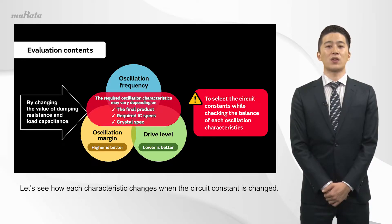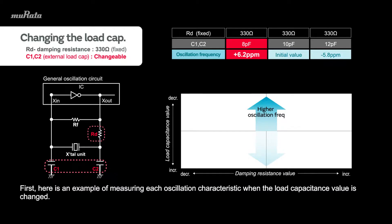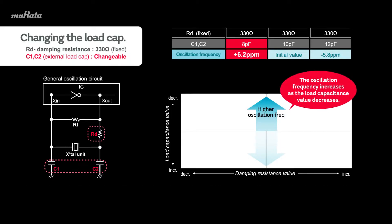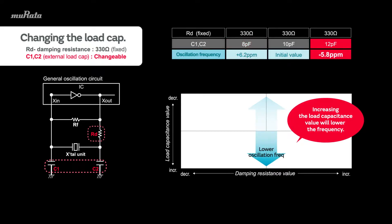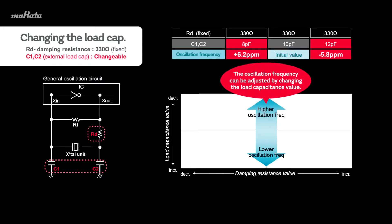Let's see how each characteristic changes when the circuit constant is changed. First, here is an example of measuring each oscillation characteristic when the load capacitance value is changed. The oscillation frequency increases as the load capacitance value decreases. Conversely, increasing the load capacitance value will lower the frequency. Therefore, by changing the load capacitance value, the oscillation frequency can be adjusted and the desired oscillation frequency can be obtained.